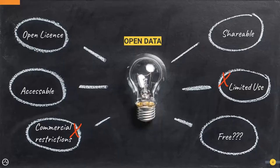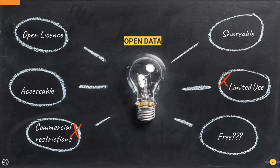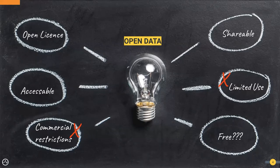Open data has an open license, it's accessible and shareable, with no restrictions on its use. These are datasets that people can access, use commercially or personally, and do whatever they like with. Free is sometimes mentioned but that's not necessarily always the case — it depends on where the data is coming from and the cost to host, maintain, produce, and keep it updated.